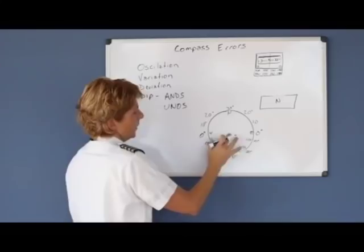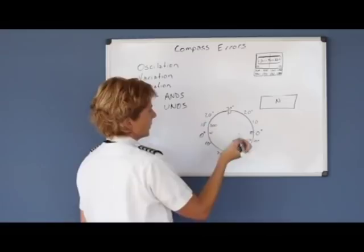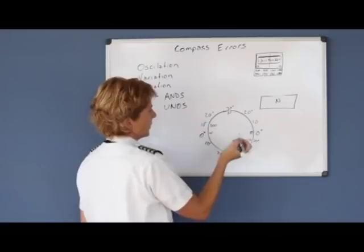I'll just give you an example. Let's say that the controllers told you to turn to heading 300. You ask yourself, should you undershoot or overshoot?